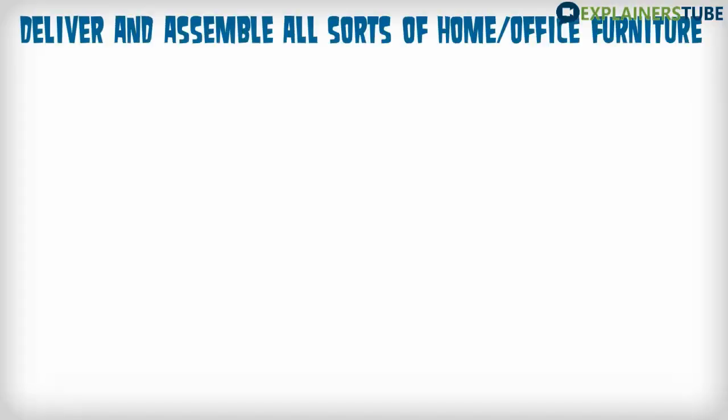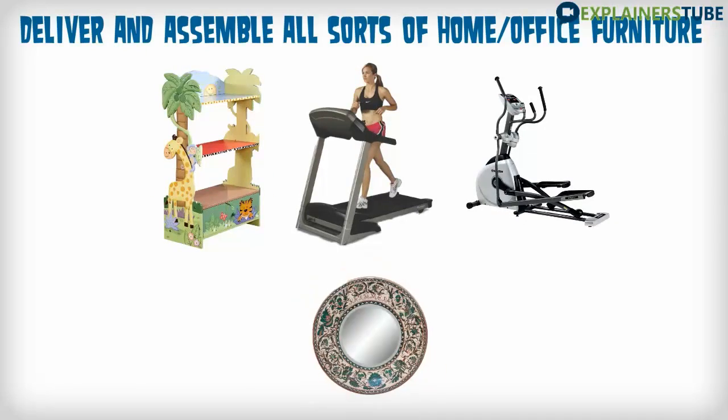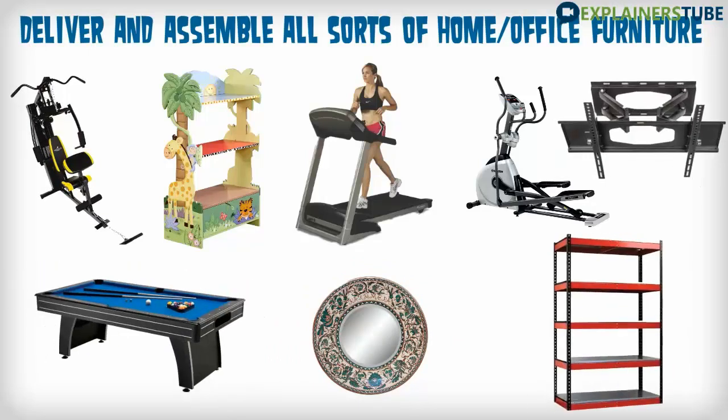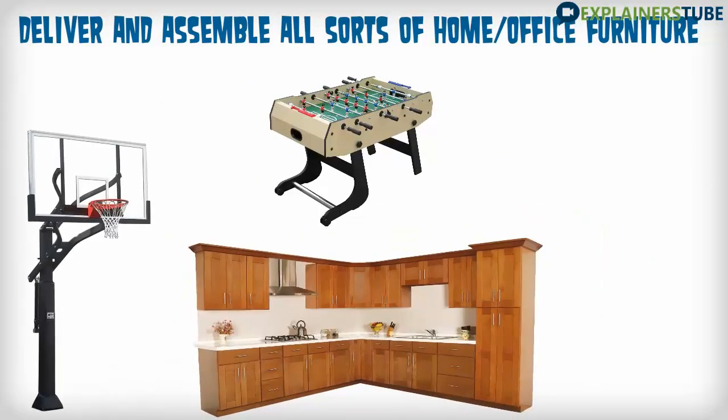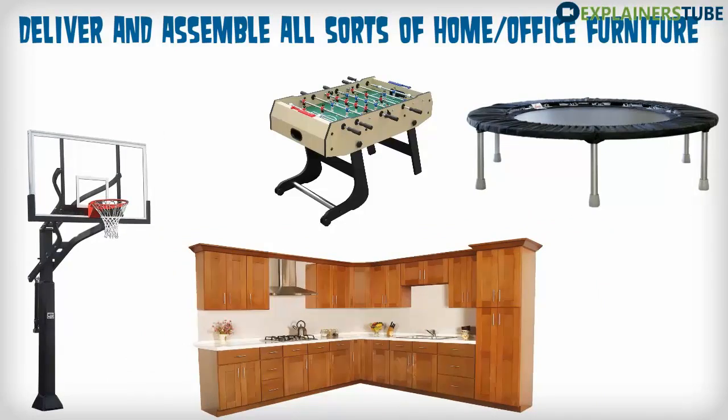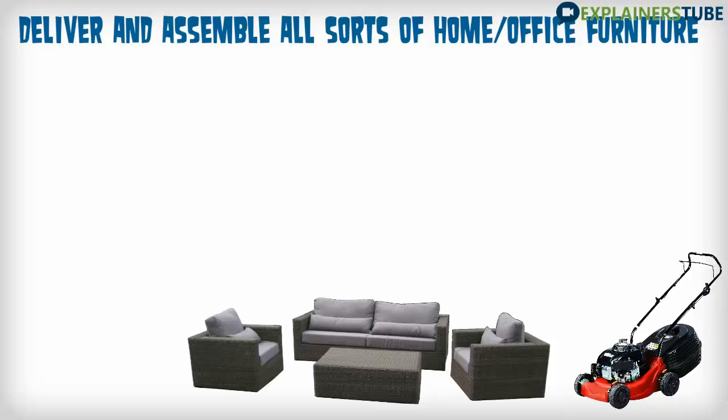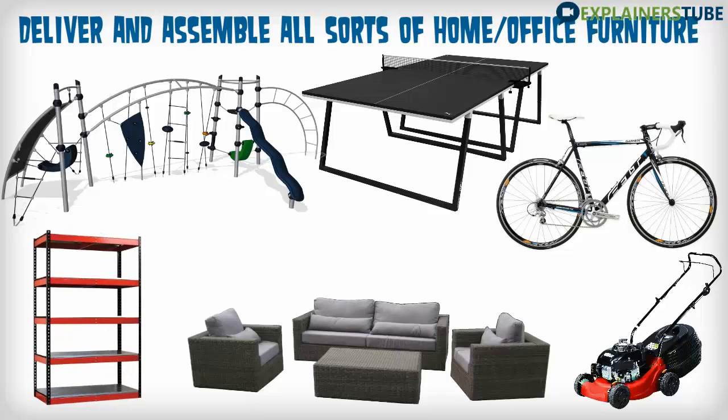We deliver and assemble all sorts of home office furniture such as treadmills, kids furniture or baby furniture, ellipticals, art, picture and mirror hanging, home gyms, TV mounting, pool tables, storage sheds, game tables, kitchen cabinet installation, basketball systems, trampoline assembly, barbecue grills, RTA or patio furniture, lawn equipment, ping pong tables, bicycles, playground equipment, shelving and storage systems, and much more.